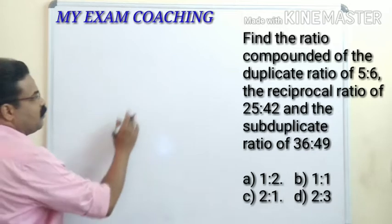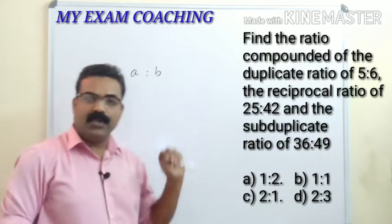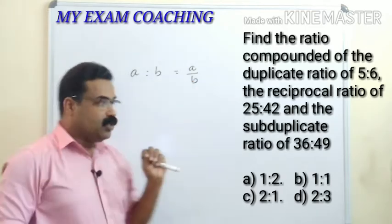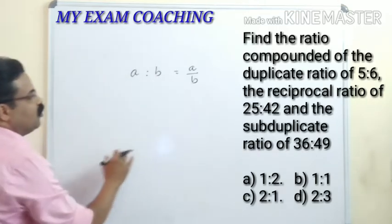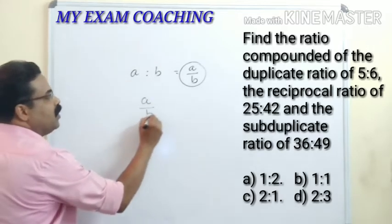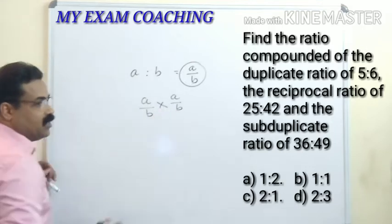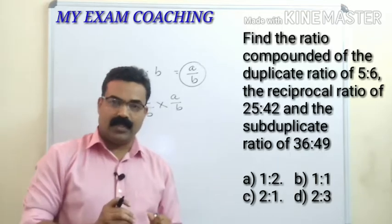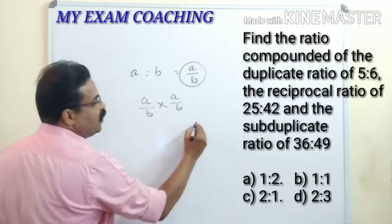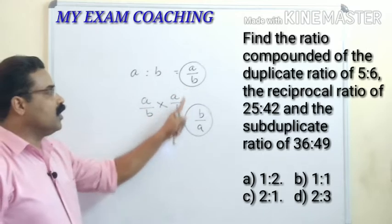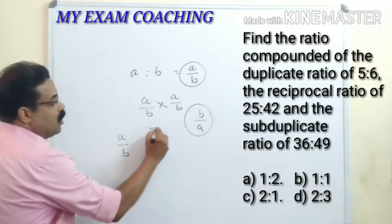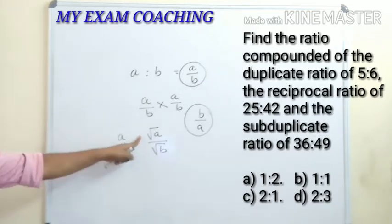Suppose we have a ratio a is to b, which can be written as a by b. The duplicate ratio of a by b means you multiply it two times: a/b × a/b. The reciprocal ratio of a by b becomes b by a — it is turned upside down. The sub-duplicate ratio of a by b is written as root(a) by root(b).